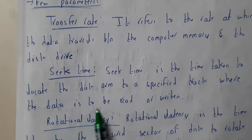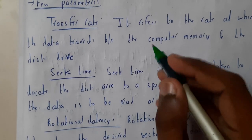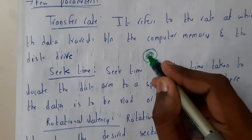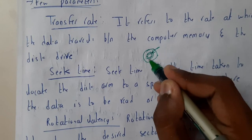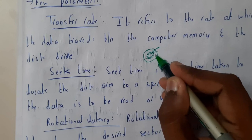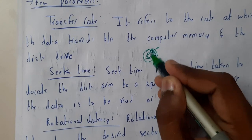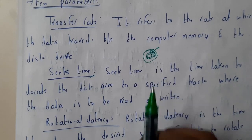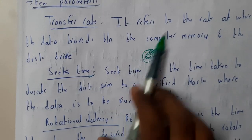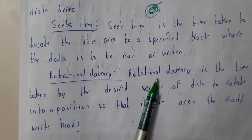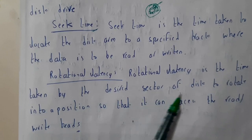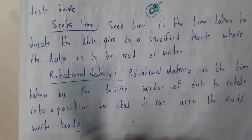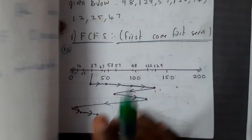Seek time is the time taken to move the disk arm to a specific track where the data is stored. There are different tracks in the disk, and locating the right one takes time — that is the seek time. Seek time includes only arm movement; rotation is not included. Rotation of the disk is covered by rotational latency, which is the time taken for the desired sector to rotate into position.